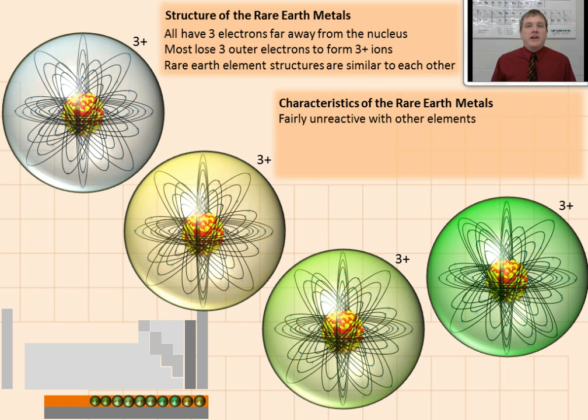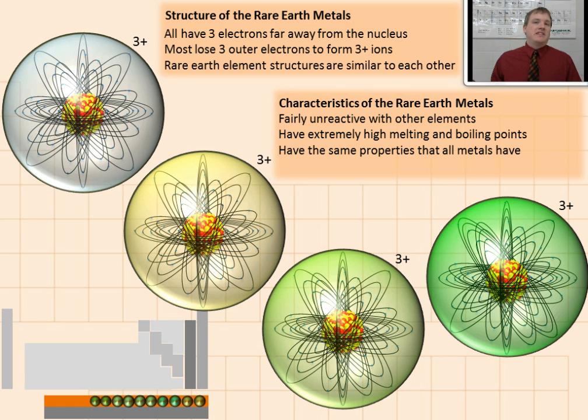They're fairly unreactive, so we can't really use their chemical reactivity easily to separate one from another. They have extremely high melting and boiling points, and they're basically the same, so it's difficult to separate them by melting them down. They have the same properties that all metals have. They're all conductive, they are shiny. And because of all of this, because these metals generally behave the same way as one another, essentially, it's very difficult to separate them.